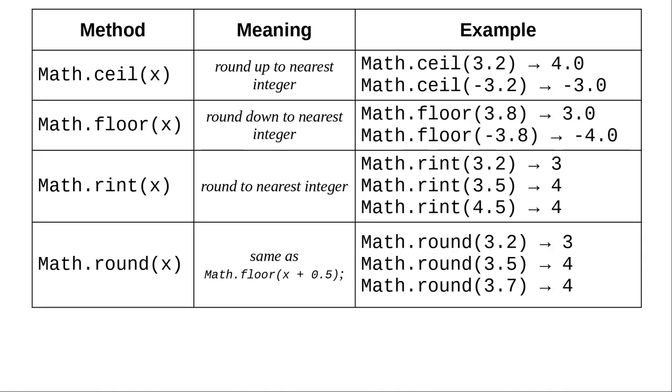Here are methods for rounding. Ceiling rounds up to the nearest integer. Floor rounds down to the nearest integer. Notice their behavior with negative numbers.